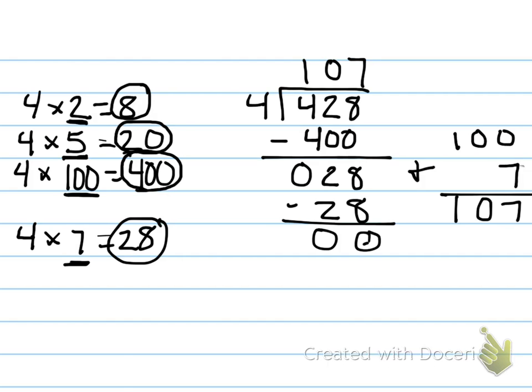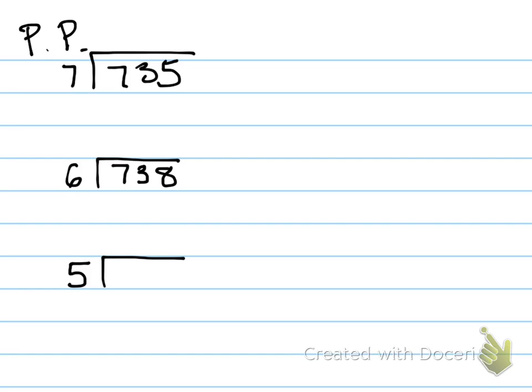And you want to write those multiplication facts on the side to kind of help you out and give you options about what to subtract. So, your practice problems. You are going to do 735 divided by 7. You are going to do 738 divided by 6 and 475 divided by 5. You are going to need more space than I left you. Make sure you list those multiplication facts on the side to help you. And keep track of those multiples on the right. Add them up at the end, and that will be your final quotient. Have a good night.